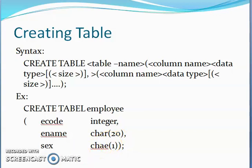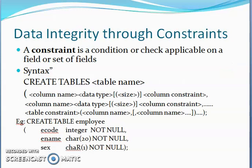Then, what is data integrity? How we can create a table using data integrity through constraints? A constraint is a condition or check applicable on a field or set of fields. The syntax is CREATE TABLE, table name — and we add column constraint. For example, in the employee table, E code integer NOT NULL. NOT NULL means that column must not contain an empty value.